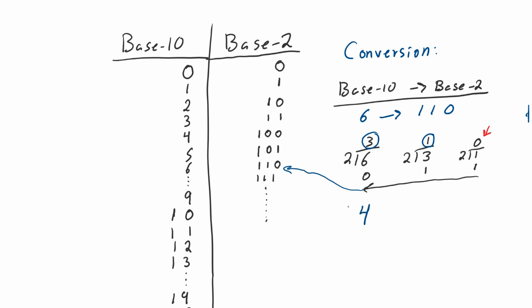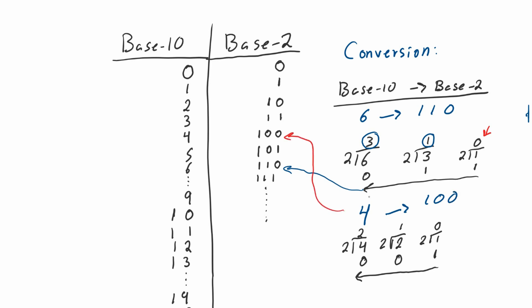Let's do another example: the number four. Four divided by two — two goes into four two times and gives a remainder of zero. Then you take the quotient and divide by two again: it fits in once, giving a remainder of zero. Then divide one by two, which goes in zero times, giving a remainder of one. Reading the remainders right to left, four in binary is 1-0-0. What if you wanted to convert something like the number 10,947? Well, it is definitely one way to do it, but I'm going to teach you a quicker trick in a bit.